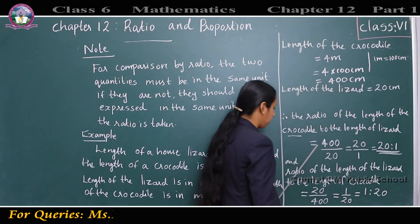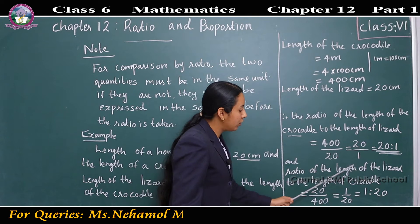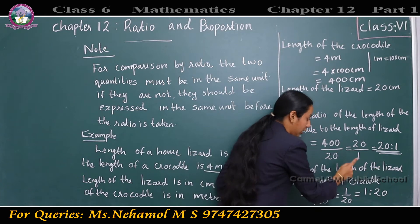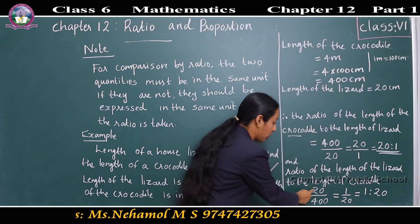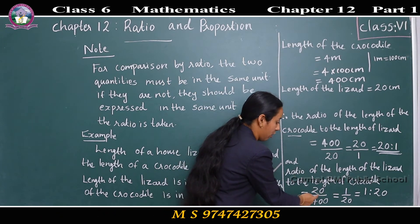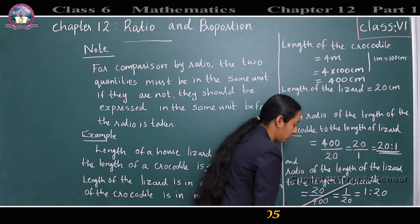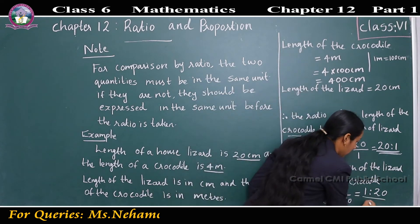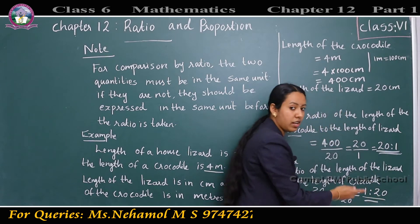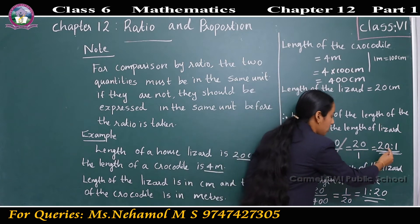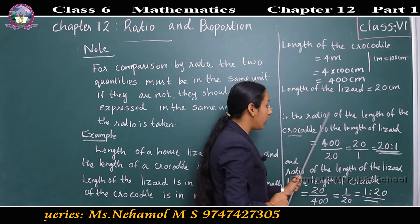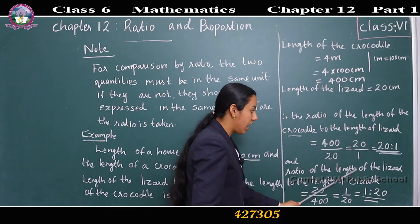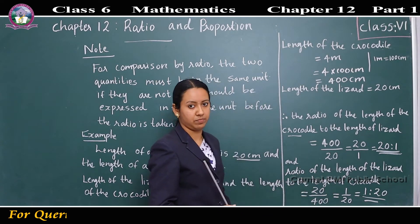The ratio of the length of the lizard to the length of the crocodile is 20 by 400, which equals 1 by 20, written as 1 is to 20. The two ratios — 20 is to 1 and 1 is to 20 — differ from each other. 20 is to 1 is the ratio of the crocodile's length to the lizard's length, while 1 is to 20 is the ratio of the lizard's length to the crocodile's length.